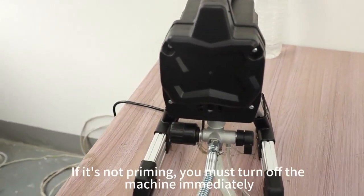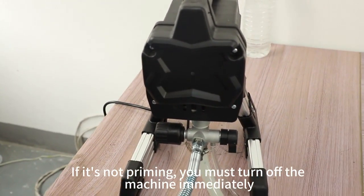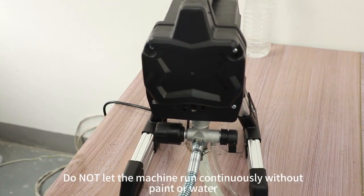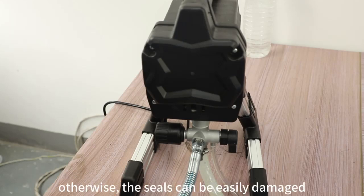If it's not priming, you must turn off the machine immediately. Do not let the machine run continuously without paint or water. Otherwise, the seals can be easily damaged.